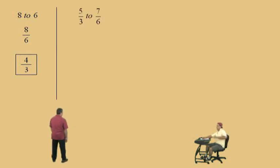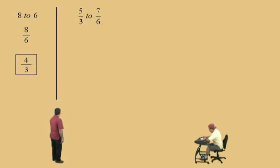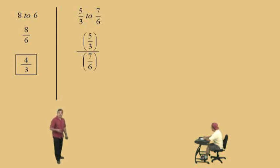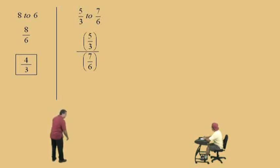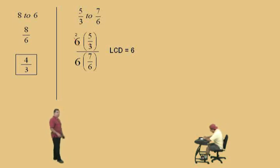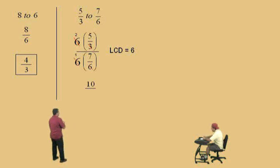Let's do another one. Don't get scared. Here we have 5 thirds to 7 over 6, so we want the ratio of 5 thirds to 7 over 6, and we're going to write our answer as a reduced fraction. Notice we're going to start by writing 5 thirds over 7/6. It's a complex fraction, and here we're going to use the clearing fractions technique, which means we need to use the LCD for our two fractions. What's the LCD, Charlie? 6. That's right, and so we multiply top and bottom by 6. Notice 3 goes into 6 how many times? 2. That's right, and 2 times 5 is 10. Now notice on the bottom, 6 goes into 6 how many times? 1. That's right, and 1 times 7 is 7, so there's our answer. 10 over 7.